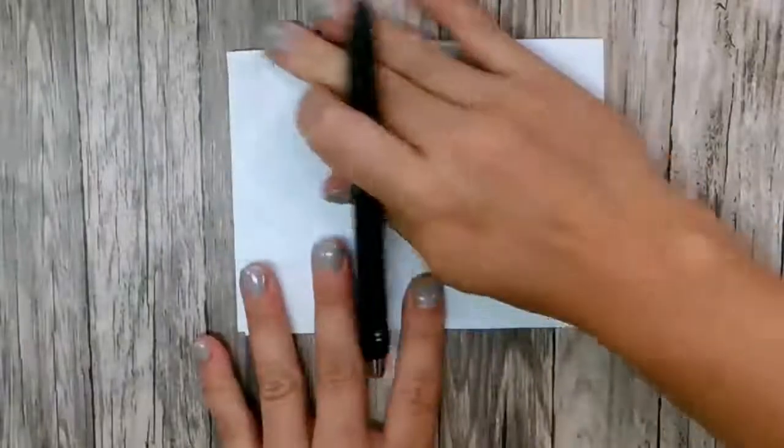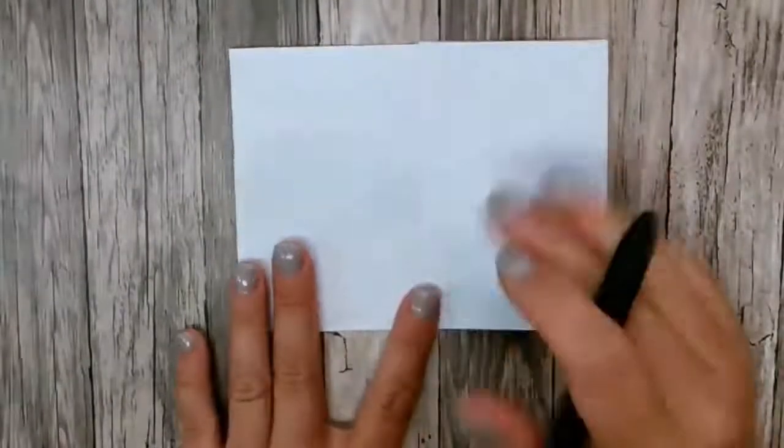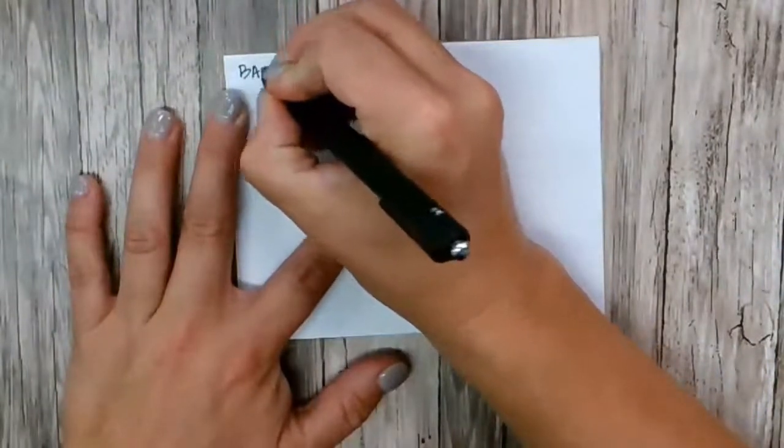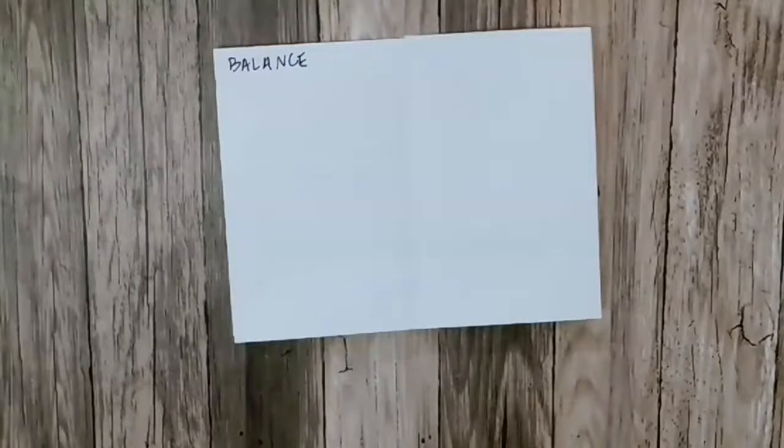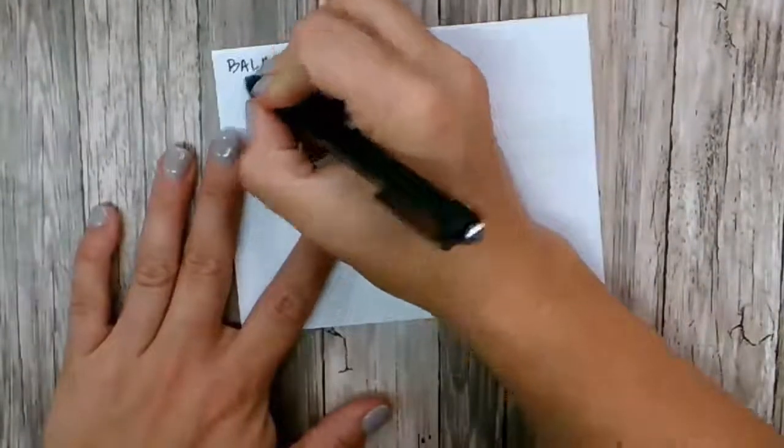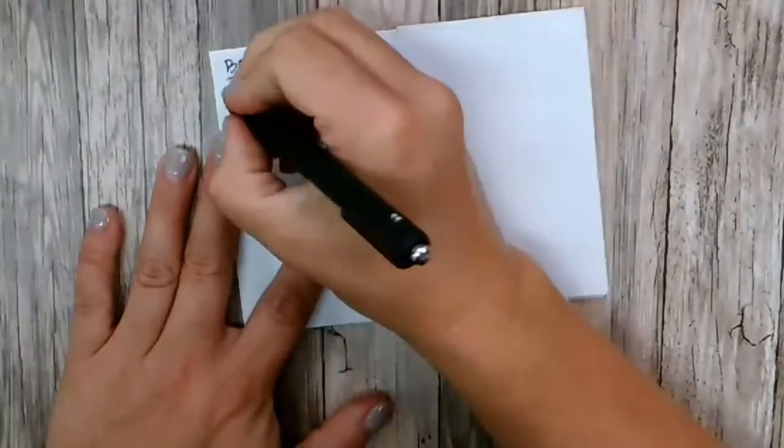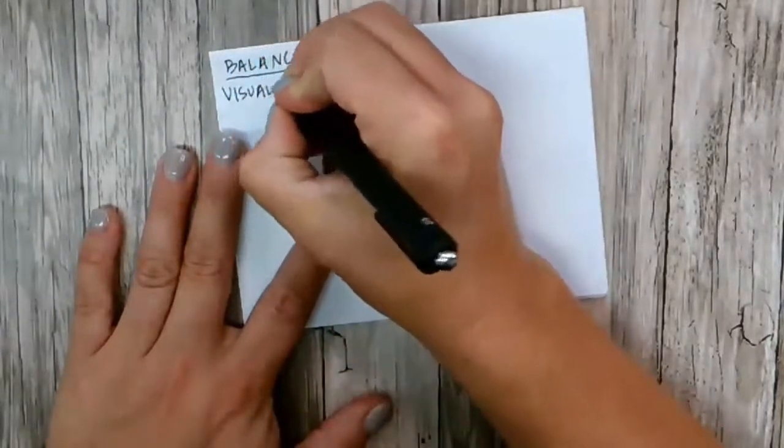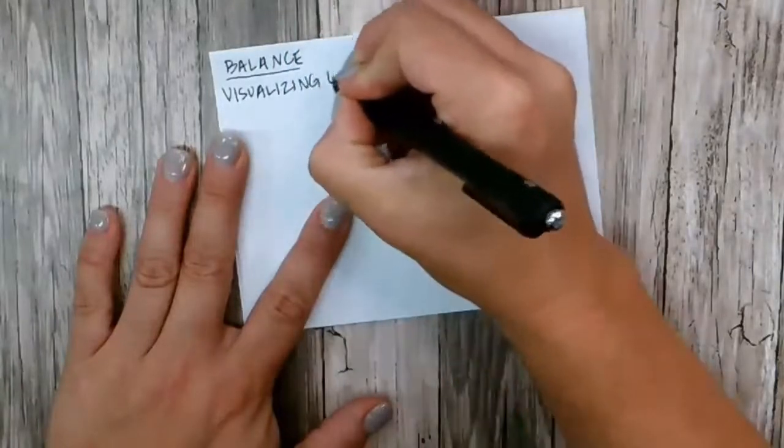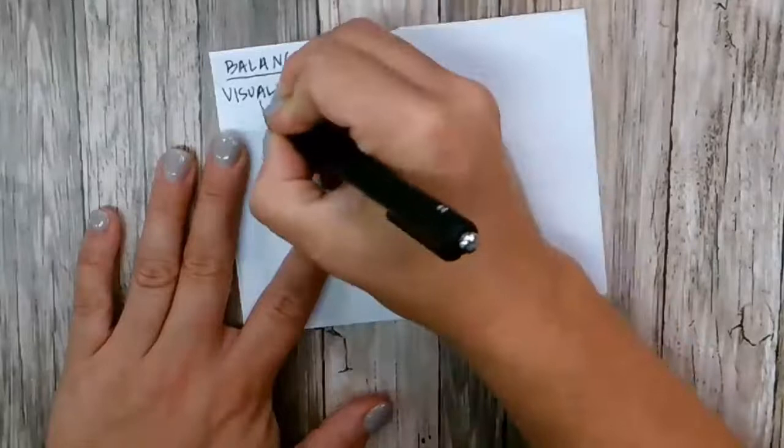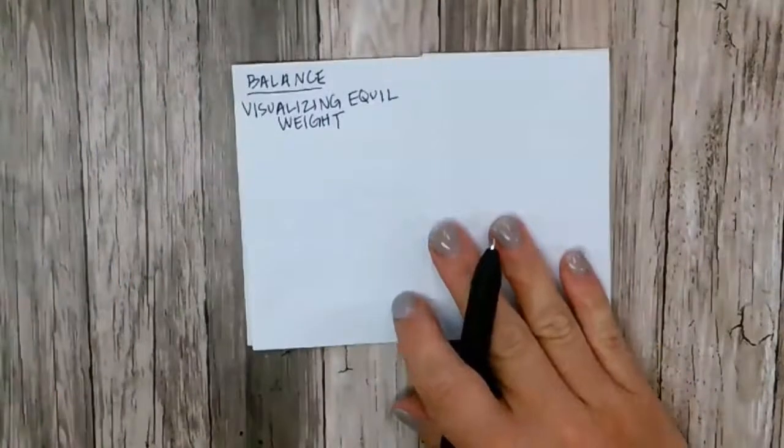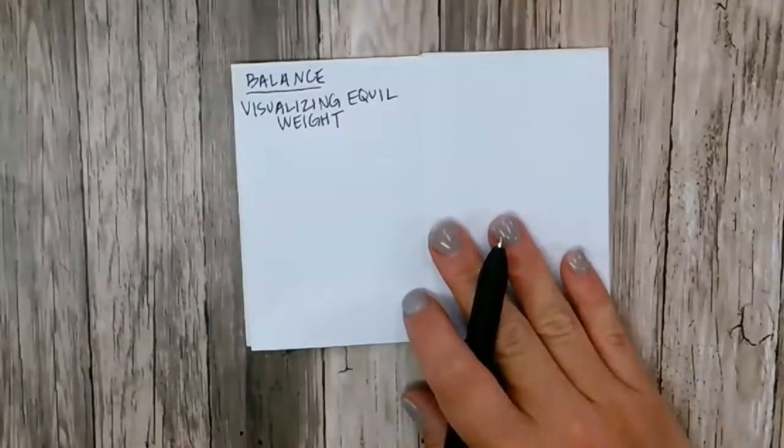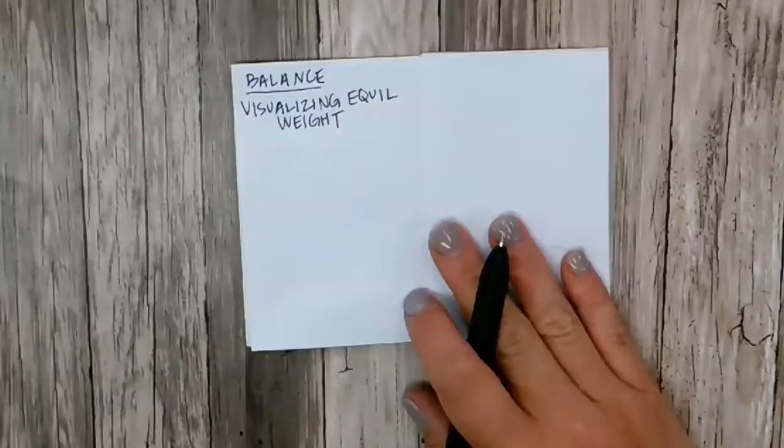I'm going to go in, and on the left side, I'm going to make the word balance. So balance is just visualizing equal weight.